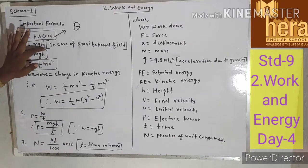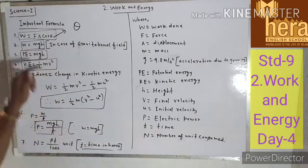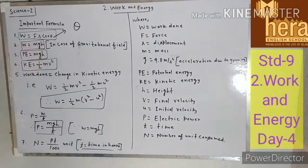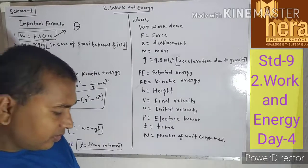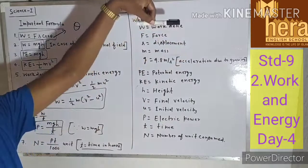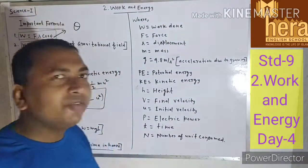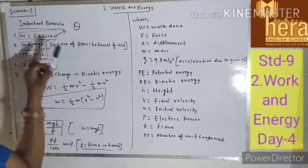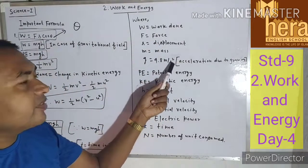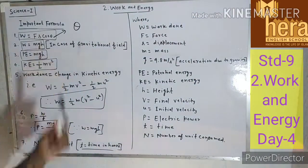W = MGH. This formula is used in case of a gravitational field. If you want to find work done in a gravitational field, you use W = MGH. For example, if you lift a marker of some mass up to 5 meters, the work done against the gravitational field is MGH, where M is the mass, G is 9.8 m/s², and H is the height of 5 meters.